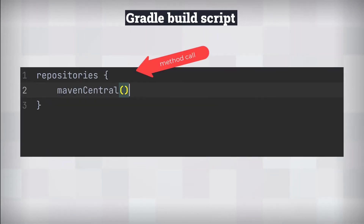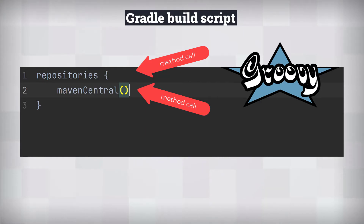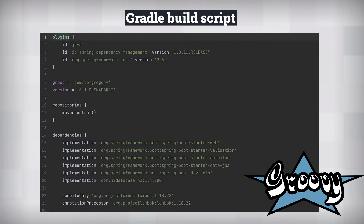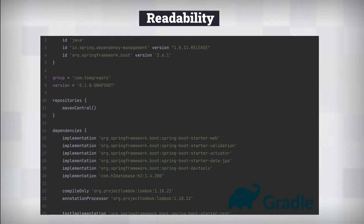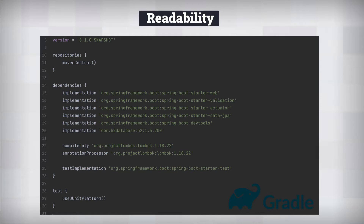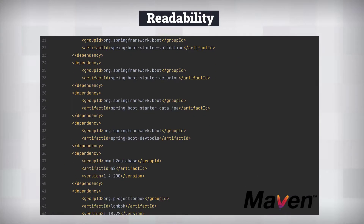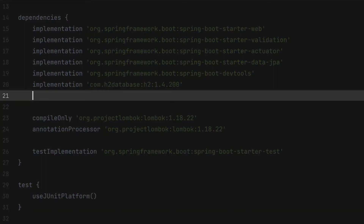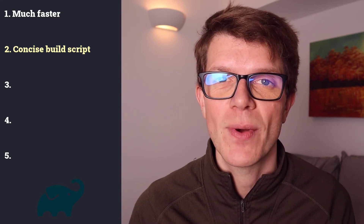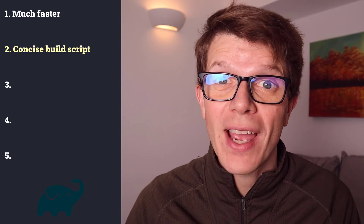Gradle uses a code-based build script, so you configure a build by calling methods in the Groovy language rather than using XML tags, but in a way that makes the script look more like a definition. The dramatic size difference has clear benefits: it helps readability — you can scan through a build file and see all dependencies at once without scrolling through pages of XML. It also helps maintainability, since adding a new dependency in Gradle is a 1-line rather than a 4-line change. More concise build scripts means less time understanding your build, and using code to define your build has some other significant advantages too.